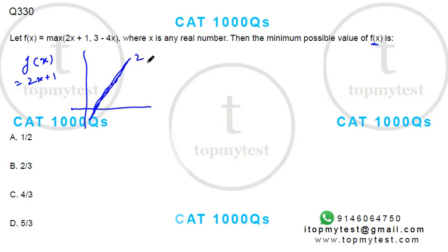This is 2x plus 1. The other function, 3 minus 4x, will decrease as x increases. Now, the combined value is the maximum of these two.